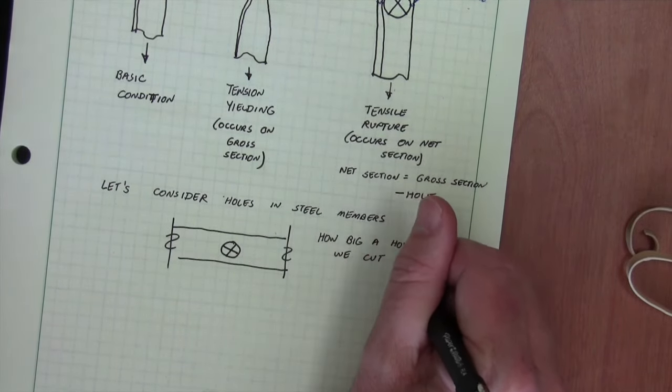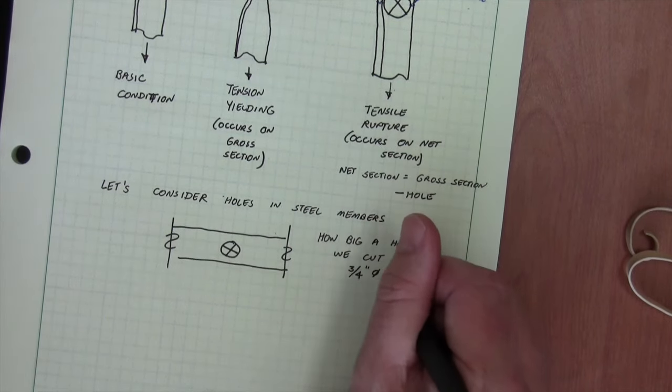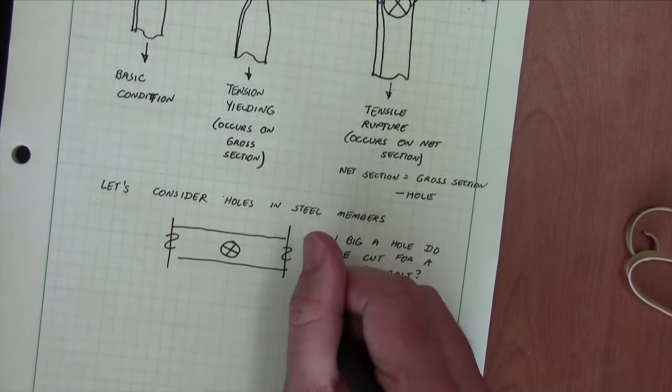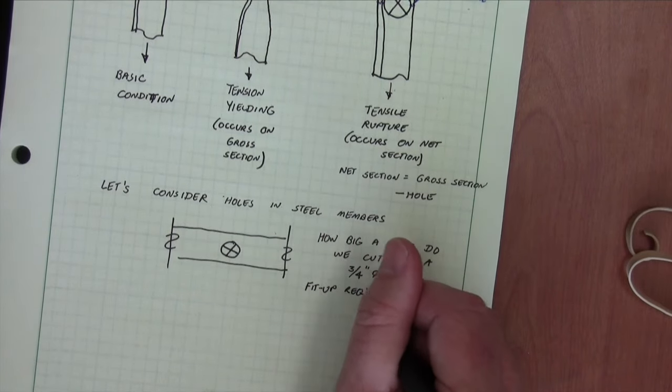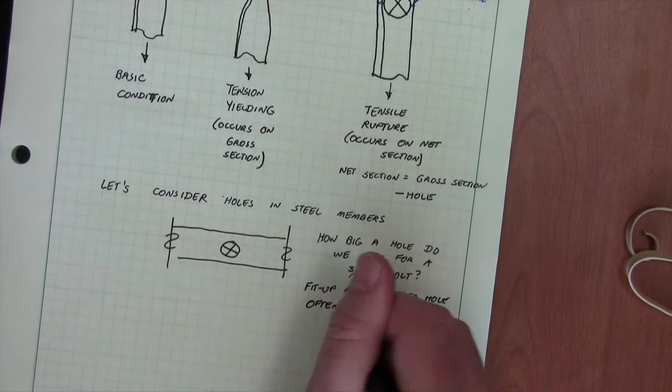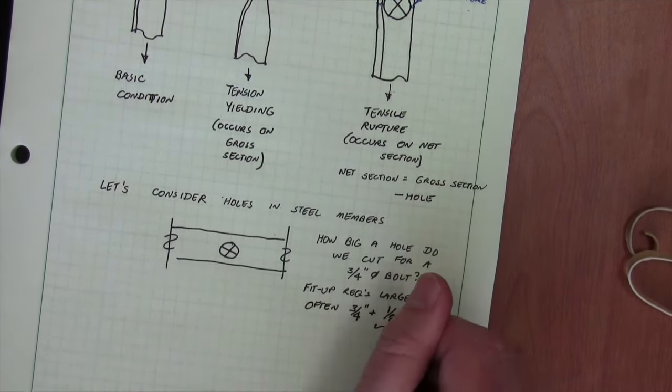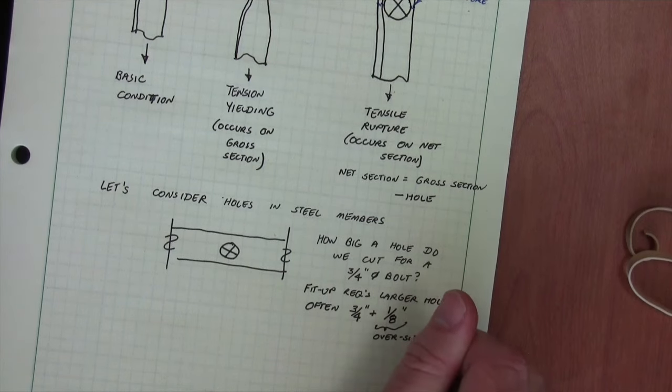Now if you said as big as the bolt, I'd say you were wrong because we have to have some tolerance for fit-up. If we made that exactly three quarters of an inch, it would be very difficult for the bolt to fit. So oftentimes we make this larger. This may vary from a sixteenth of an inch up to maybe a quarter of an inch.